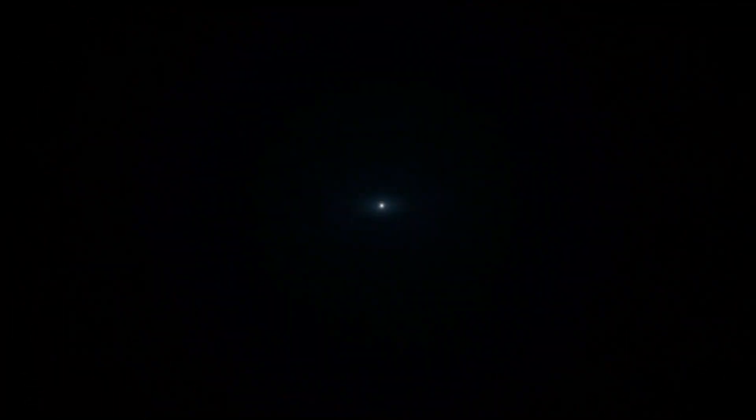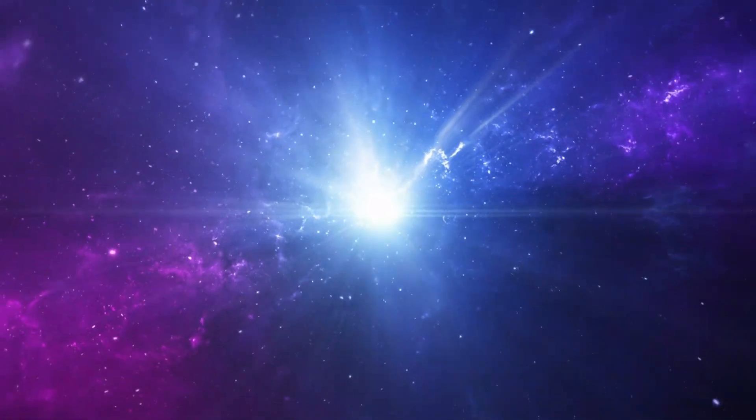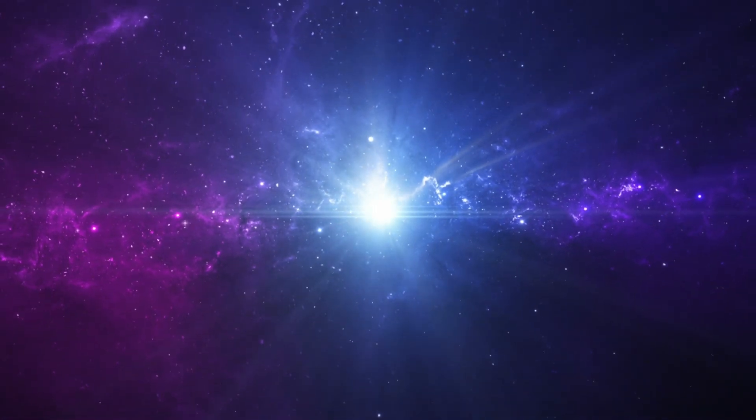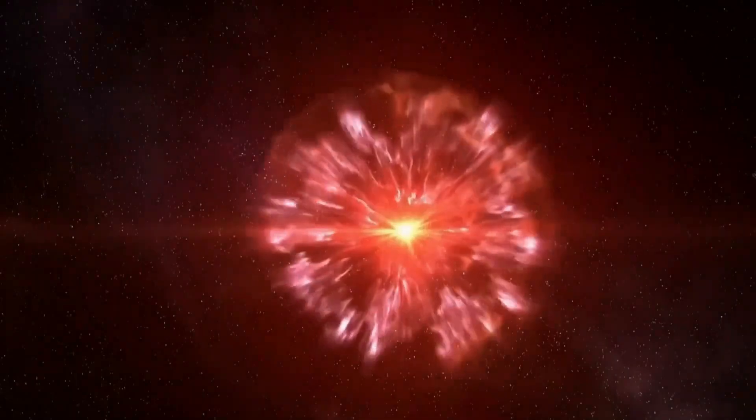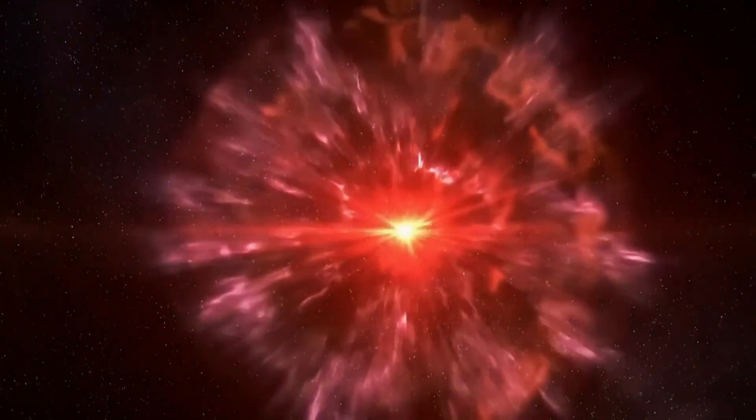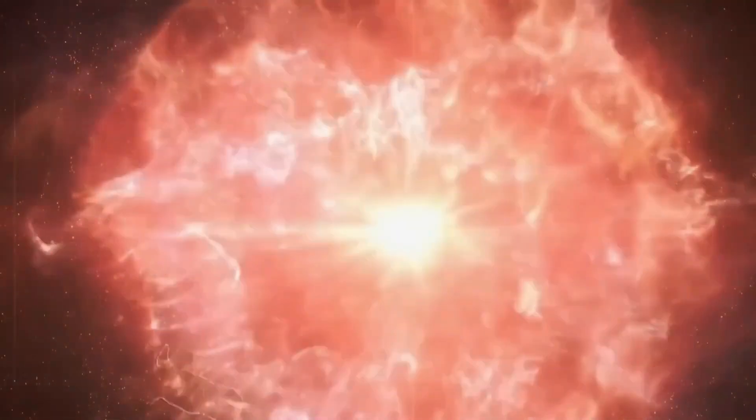A supernova is one of the most violent events in the universe. When a massive star dies, it undergoes a rapid collapse, creating an explosion so powerful that it releases a burst of energy visible across vast distances. In the case of Betelgeuse, when it eventually explodes, the amount of energy released would be immense, scattering elements like iron, carbon, and oxygen into the surrounding space.